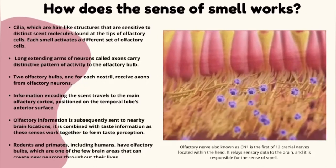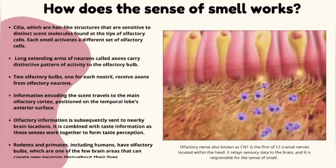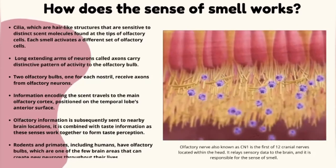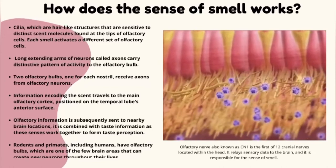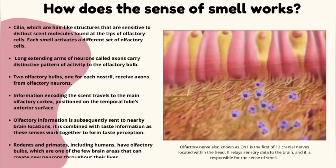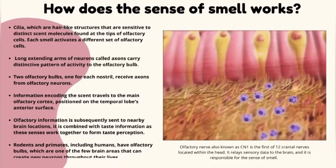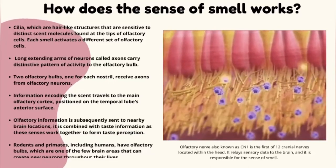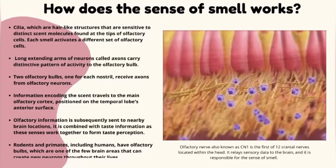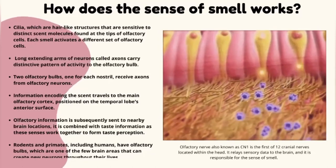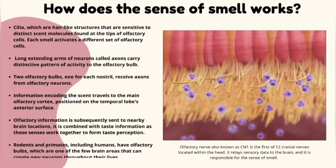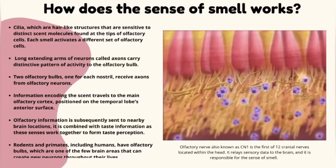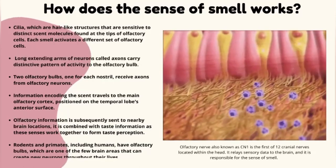Cilia — hair-like structures sensitive to distinct scent molecules — are found at the tips of olfactory cells. Each smell activates a different set of olfactory cells, resulting in a different pattern of activity. The long extending arms of neurons, called axons, carry this distinctive pattern to the olfactory bulb. Two olfactory bulbs, one for each nostril, receive axons from olfactory neurons. The information then travels to the main olfactory cortex, positioned on the temporal lobe's anterior surface. The olfactory information is subsequently sent to nearby brain locations where it is combined with taste information, and these sensors work together to form taste perception. The number and organization of neurons in olfactory bulbs can vary over time; rodents and primates, including humans, have olfactory bulbs which are one of the few brain areas that can create new neurons throughout life.